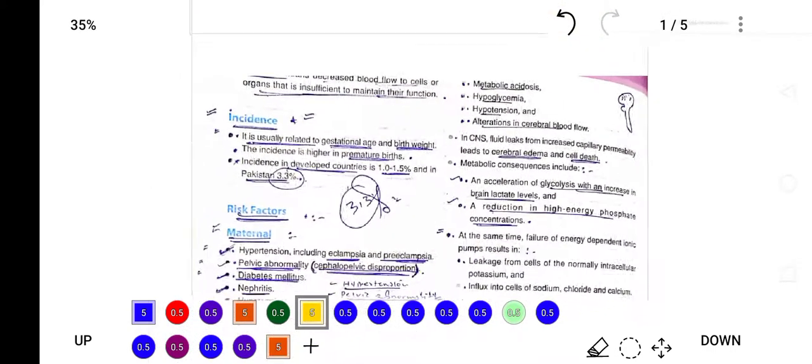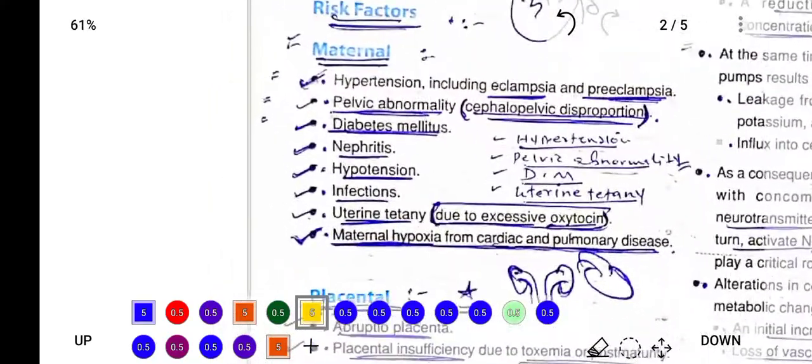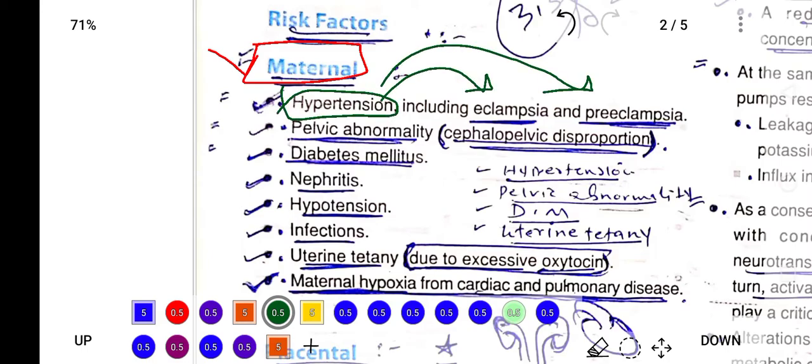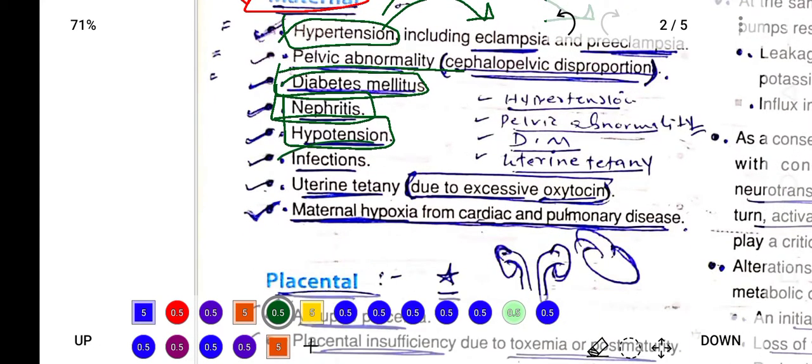Less supply of oxygen can trigger this condition known as birth asphyxia. The causes of this condition are maternal, fetal, and placental causes. Maternal causes include hypertension in the mother like eclampsia and preeclampsia, pelvic abnormality, diabetes mellitus, nephritis, hypertension, infection, uterine tetany, and maternal hypoxia because of cardiac and pulmonary disease.